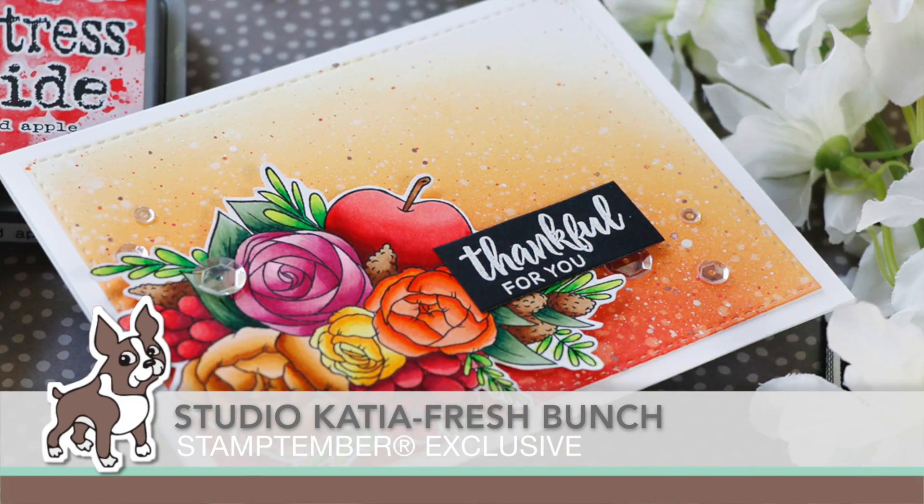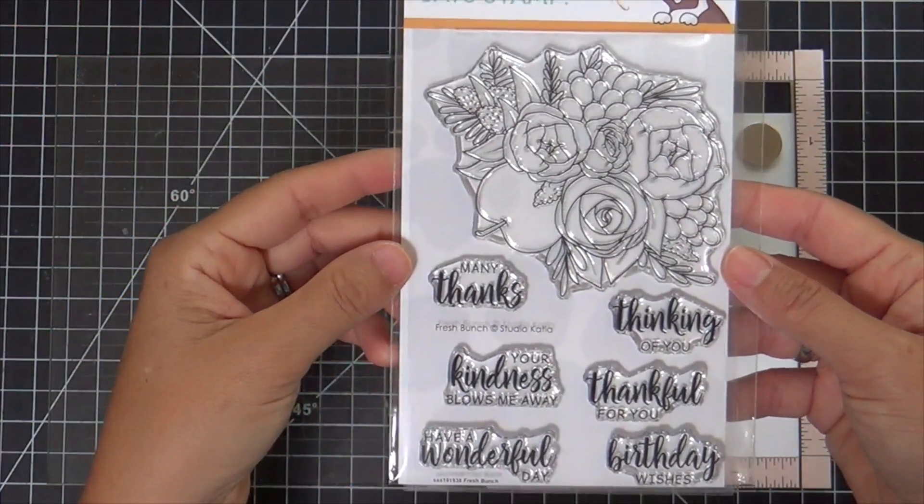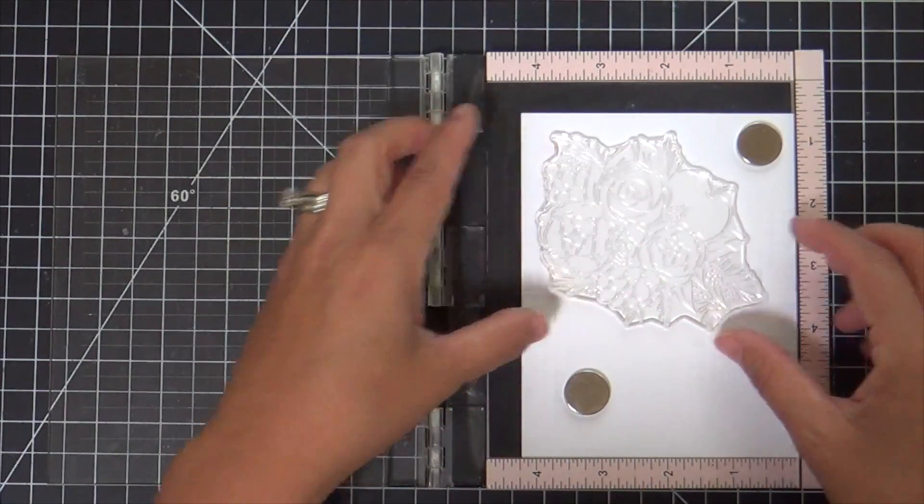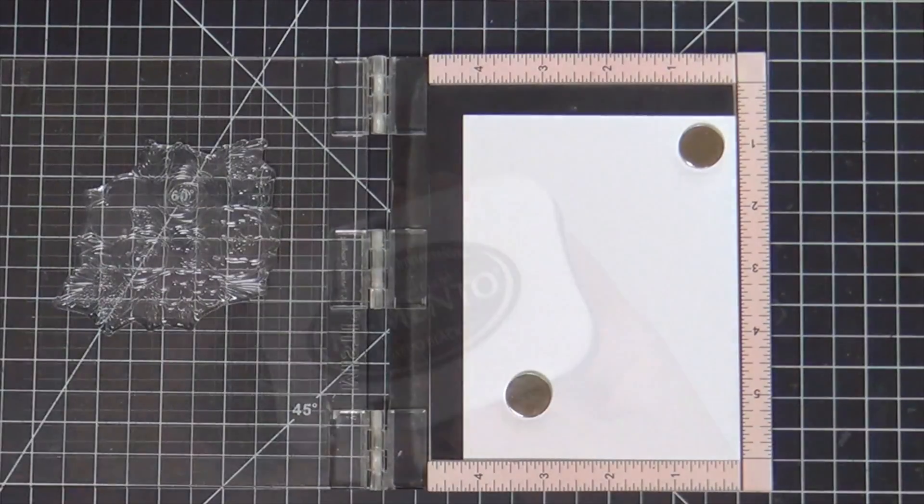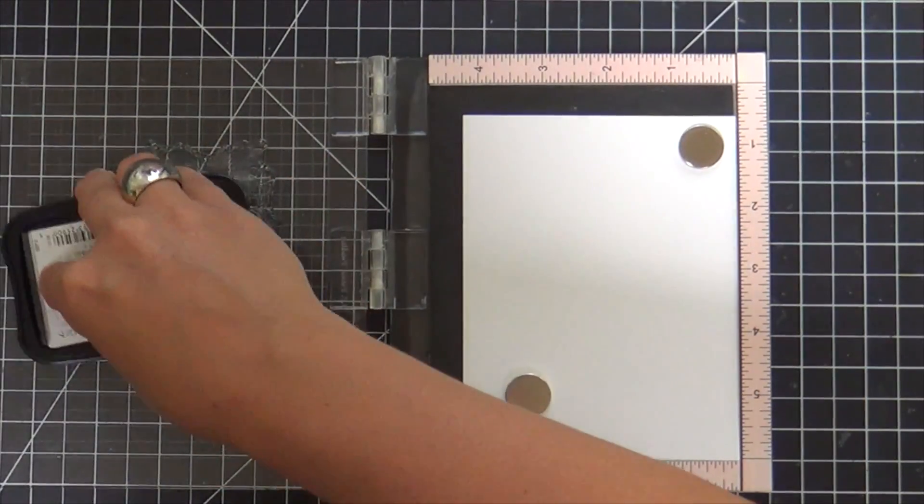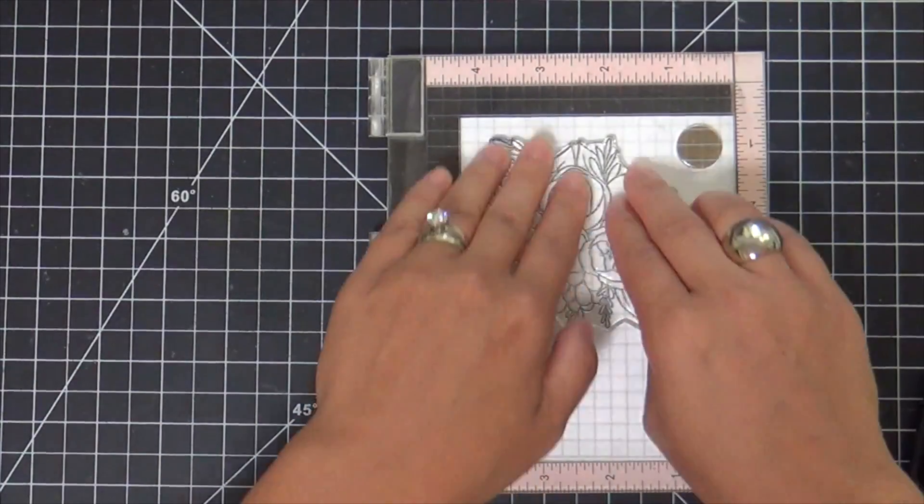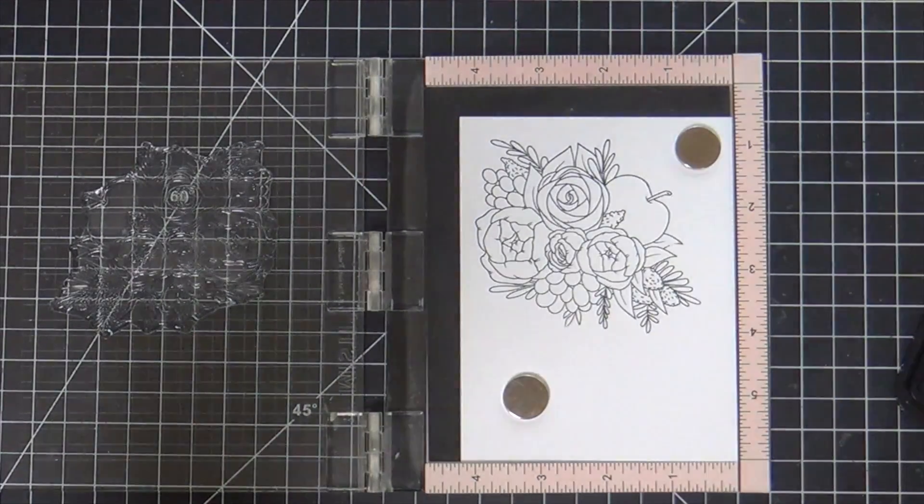Hi everybody, Laura here for Simon Says Stamp. Thank you so much for joining me today. I'm excited to share with you the latest Stamptember exclusive set designed by Studio Katia called Fresh Bunch. It's got a fresh little bunch image on it—I wouldn't say little, it's large. It's like fruit and flowers, like a bouquet or a bunch.